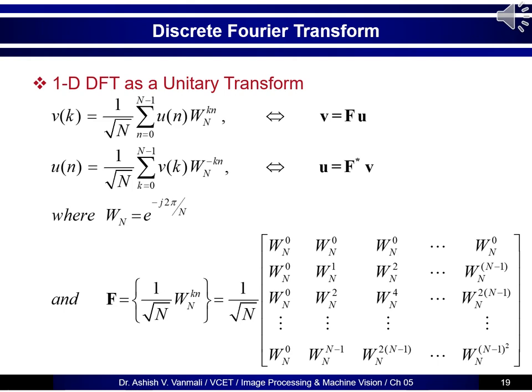If we write them as a matrix representation, then the transformed vector v equals F times vector u, and the corresponding inverse will be vector u equals F conjugate times v. Here u is the input vector, v is the transform vector after DFT, F is the transformation matrix, and we consider W_N as e raised to minus j 2 pi by capital N. The transformation matrix can be written as 1 upon root N times W_N raised to kn.